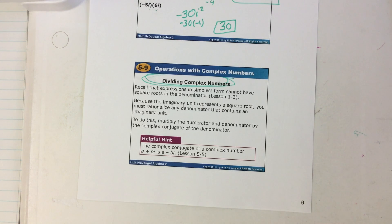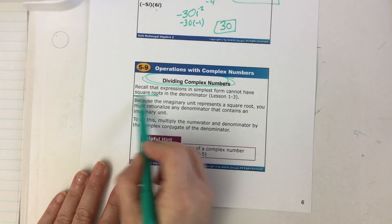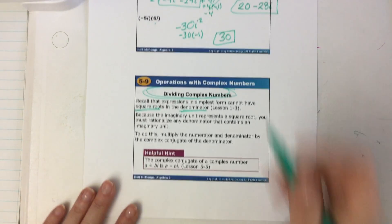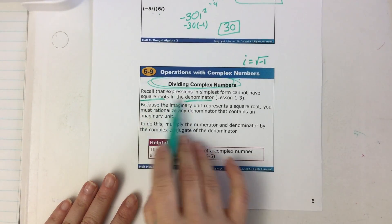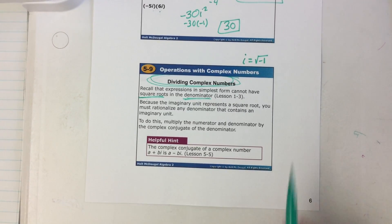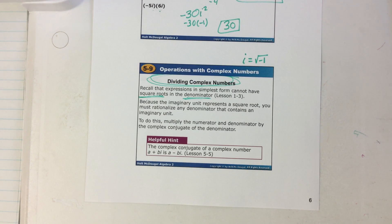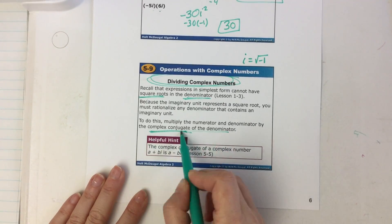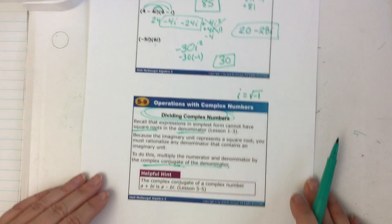Last idea. Recall — going back to chapter one, section three — you cannot have a square root in the denominator of a fraction. Remember i is really the square root of negative one, so following that same rule, you cannot have an i on the bottom of a fraction. If you have an imaginary value on the bottom, you must multiply the numerator and denominator by the complex conjugate of the denominator, because when you multiply complex conjugates the i's cancel and you end up with a real number.